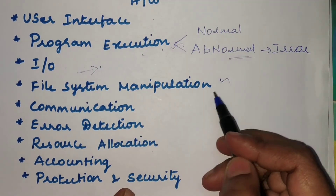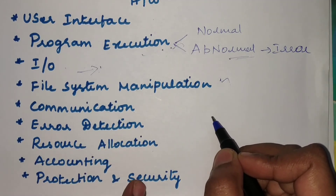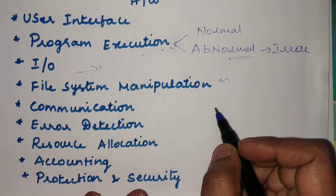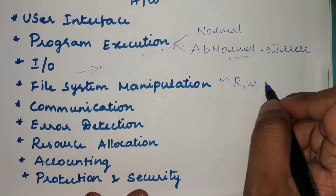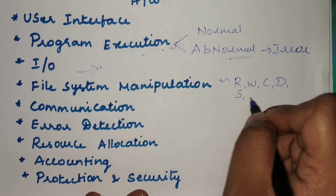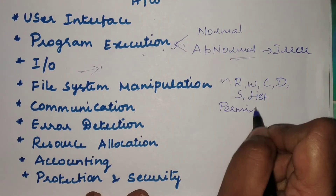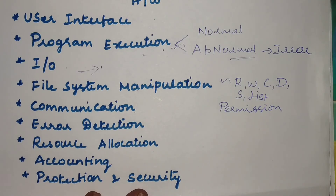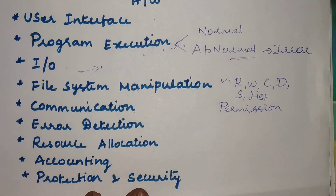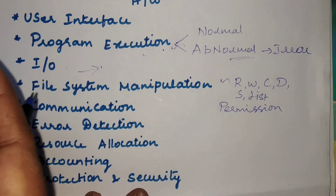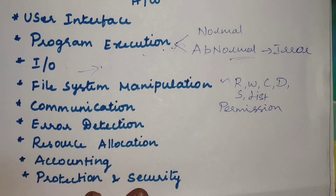The next service is file system manipulation. There are many file operations that can be executed by the operating system: read, write, create, delete, search, and list operations — these are the basic set of operations we can perform on the file system. In addition, the operating system provides a permission operation, where access permissions are assigned to files by the file owner. Some access may be denied to certain users, so unauthorized users cannot access a particular file.